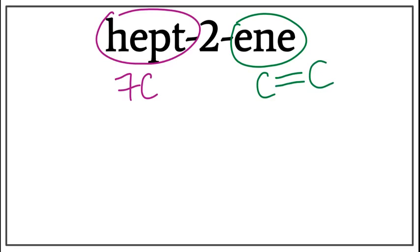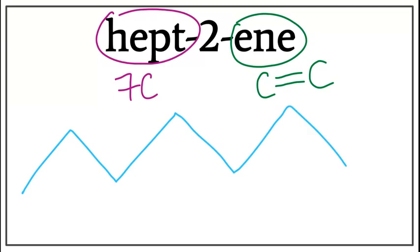Let's draw the seven-carbon chain. A trick to draw these is that you always count till one less than the number of carbons you want to draw. So we count: 1, 2, 3, 4, 5, 6.